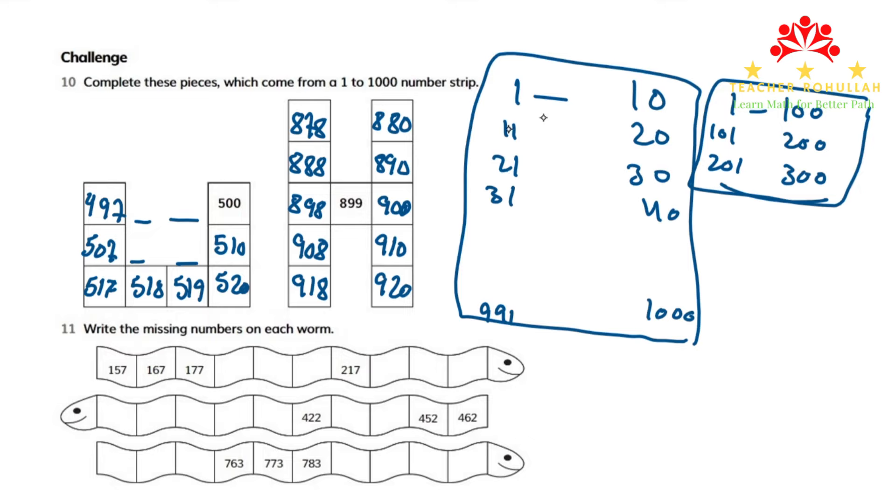In this case, between each row, there is a difference of 10. Between 1 and 11, there is a difference of 10. Between 11 and 21, there is a difference of 10. This is how we can solve the number 1 to 1000 strip.